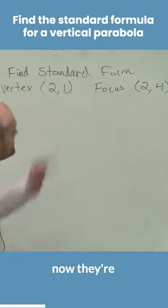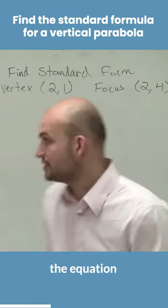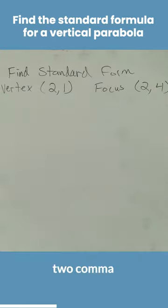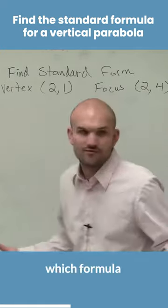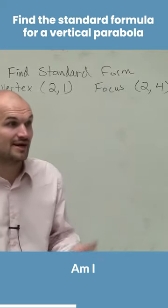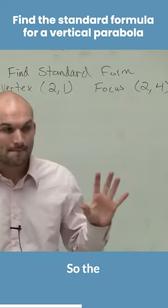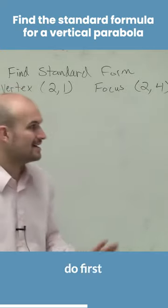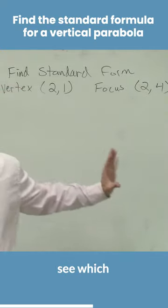OK. So right now, they're saying find the standard formula equation if we have a vertex at 2 comma 1 and a focus at 2 comma 4. So right now, I need to determine which formula am I going to be using with the focus? Am I going to use the vertical or the horizontal? So the best thing I would tell you guys to do first is to plot the points and see which one would make sense.